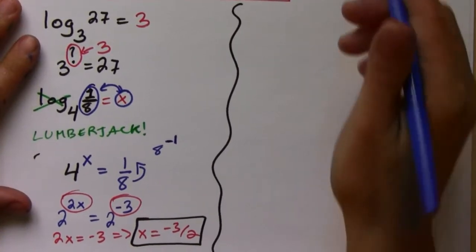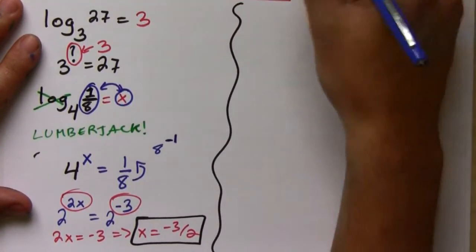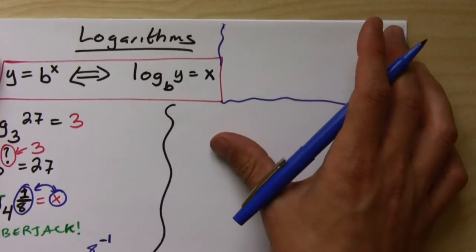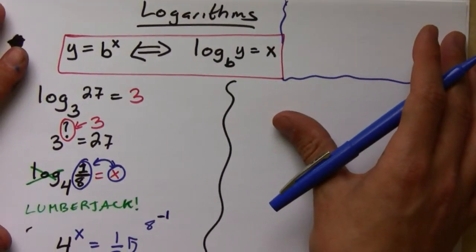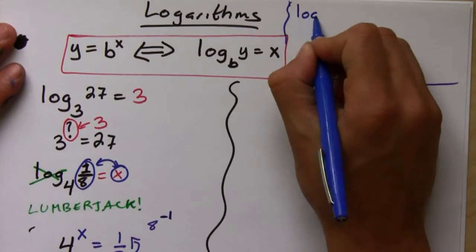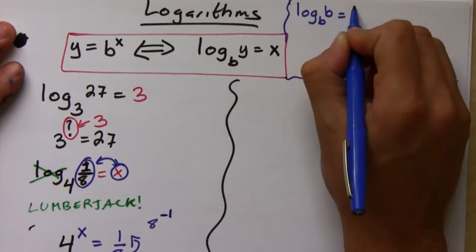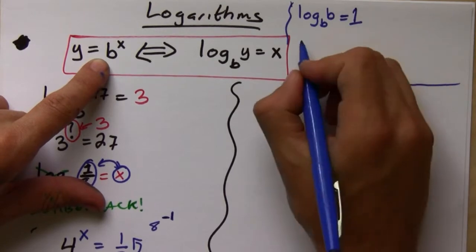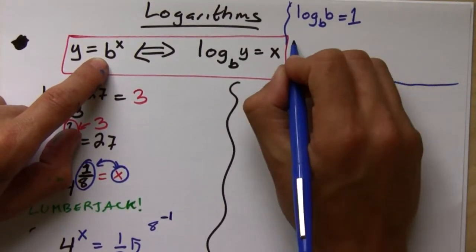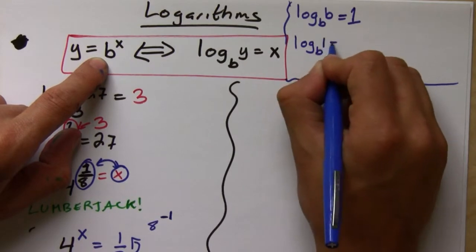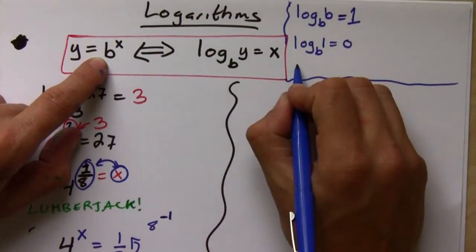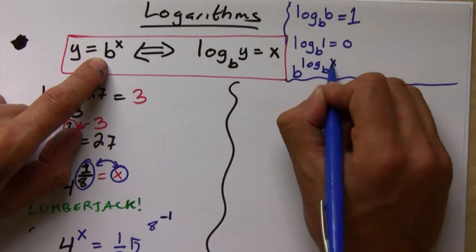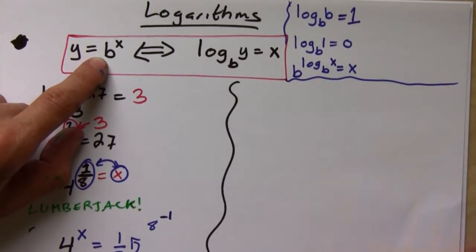Let's do a quick recap of the properties and laws. First, log base b of b equals 1 — when the base equals the argument. Second, log of 1 is always zero. Third, when the base is raised to a log with the same base, the result is just x. You can verify all of these with the definition.